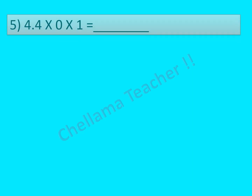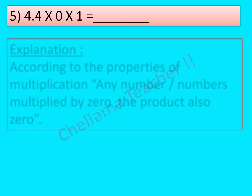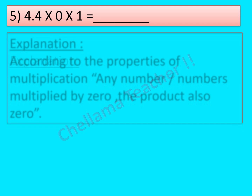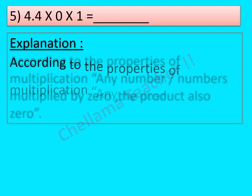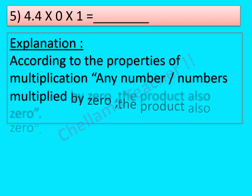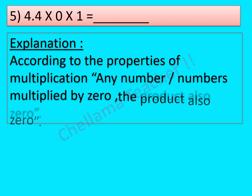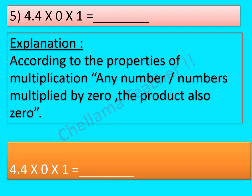Question No. 5: 4.4 × 0 × 1 is equal to dash. According to the properties of multiplication, any number multiplied by 0 gives a product of 0. So the product of 4.4 × 0 × 1 is equal to 0.